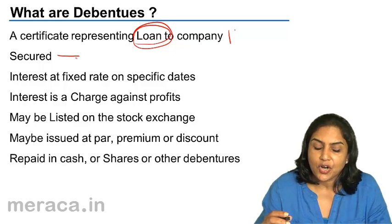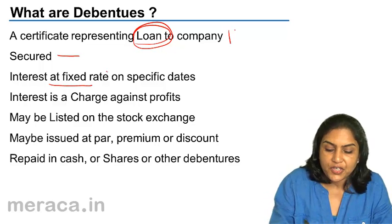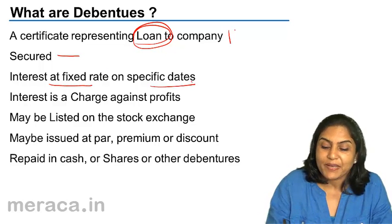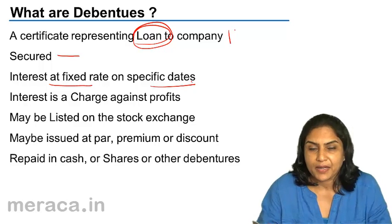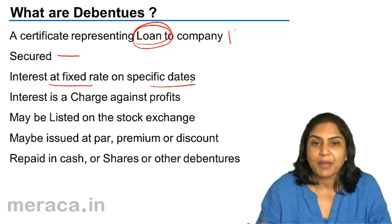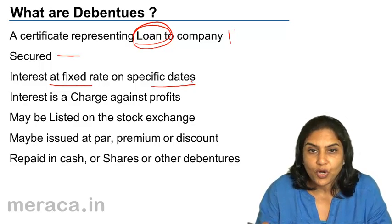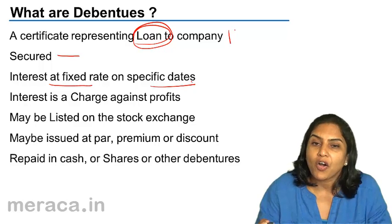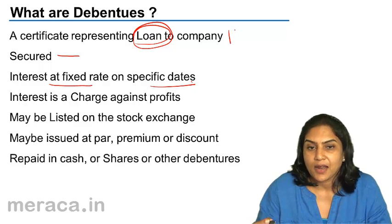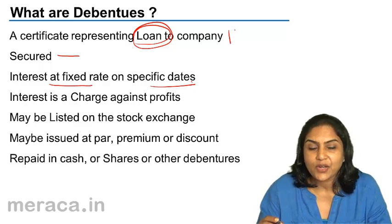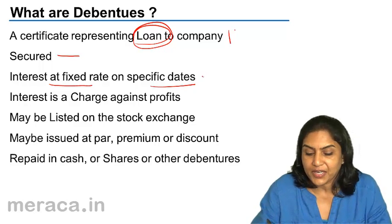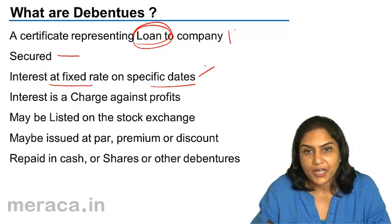Interest on debentures is paid at a fixed rate on specific dates. Usually they are paid half-yearly — maybe 30th June and 31st December — or they are paid quarterly, or they may be paid once a year, annually. But there is a specific date for payment of interest.